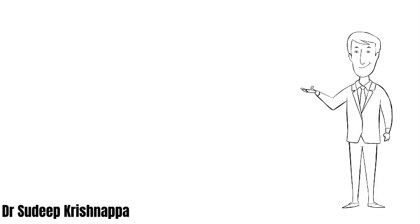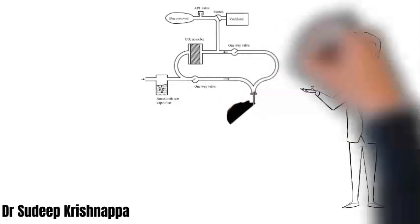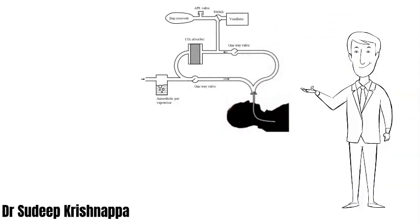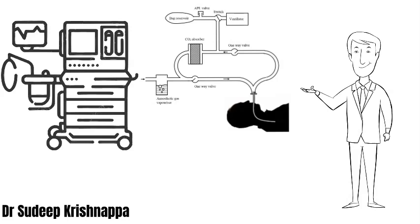Now replace the water dispenser with the tubing of the circle system and the patient's functional residual capacity. The water being drained every minute is replaced by the amount of oxygen the patient extracts per minute, and the tap refilling the dispenser is replaced by the fresh gas flow from the anesthesia machine. If oxygen consumption is about 200 to 300 mils per minute, any fresh gas flow in excess of that gets wasted — either vented into the atmosphere of the operating theater or into the scavenging system.